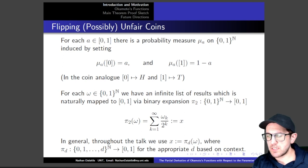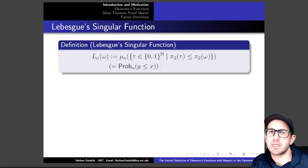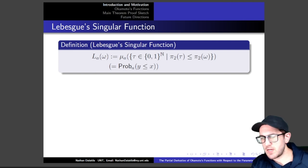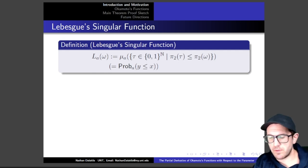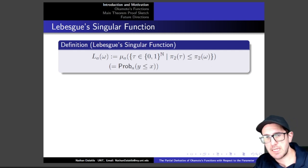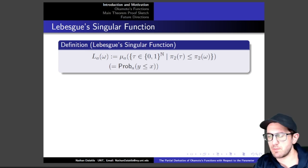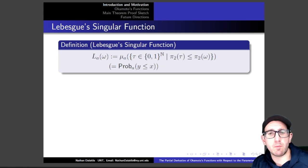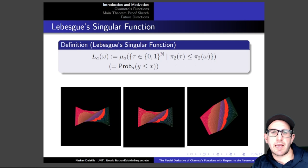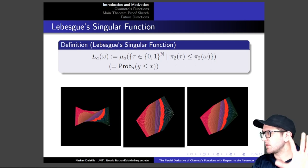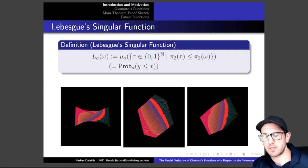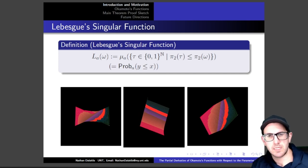The core of our project is that we're studying how these probability measures change with the parameter. The example function that is helpful when thinking about this is Lebesgue's singular function, which gives you a visual for each of these probability measures for a particular input. It measures the set of all symbolic points which have binary expansion less than or equal to the binary expansion of your input — the same thing as the cumulative distribution function for the probability distribution induced by the probability measure mu_A. If we're looking at all of them at once, we're really looking at a surface.